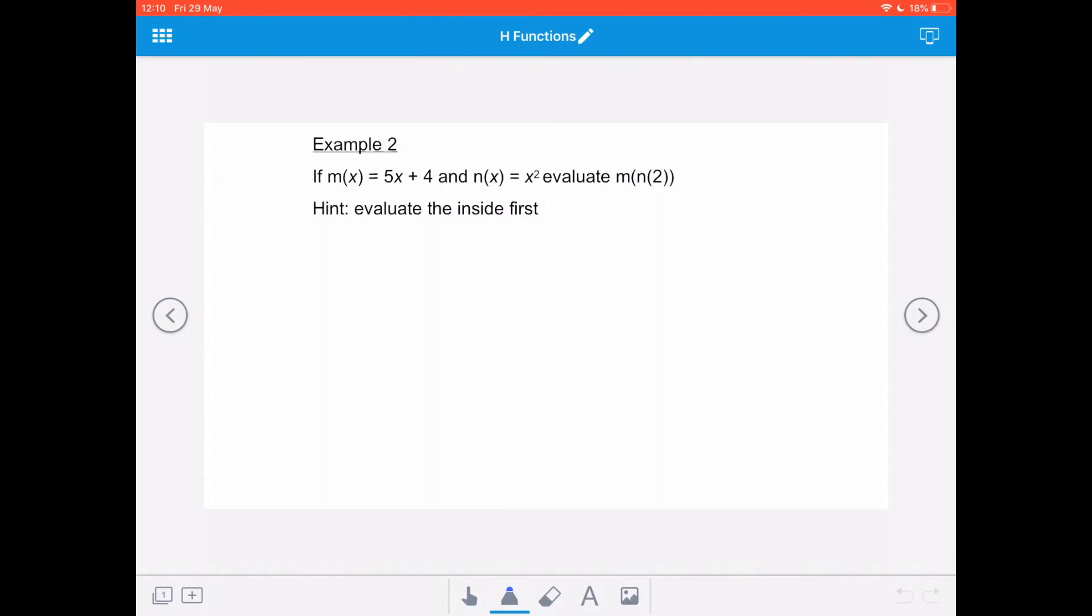So the first thing I want to do is evaluate n of 2. So I know that n of x equals x squared. So that means that n of 2, I'm replacing that x with a 2, so it's going to be 2 squared. So my n of 2 value is 4.